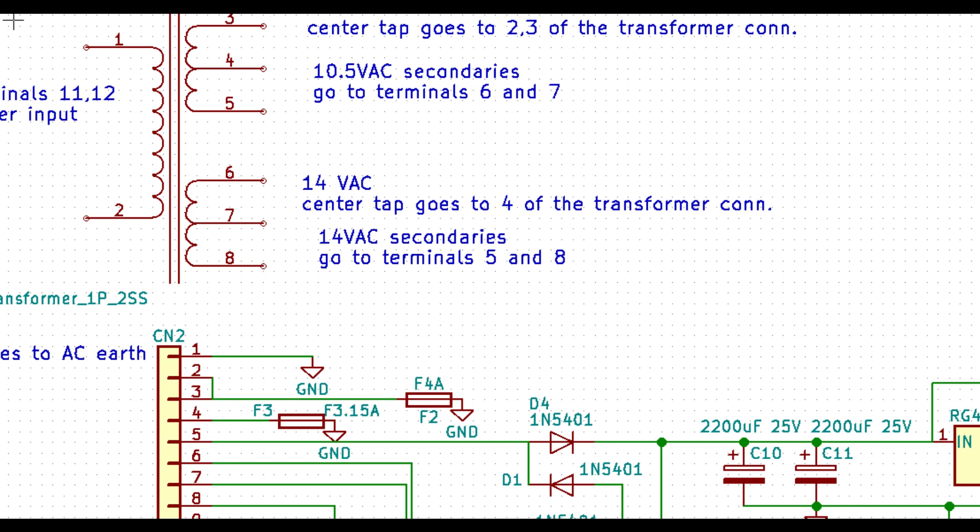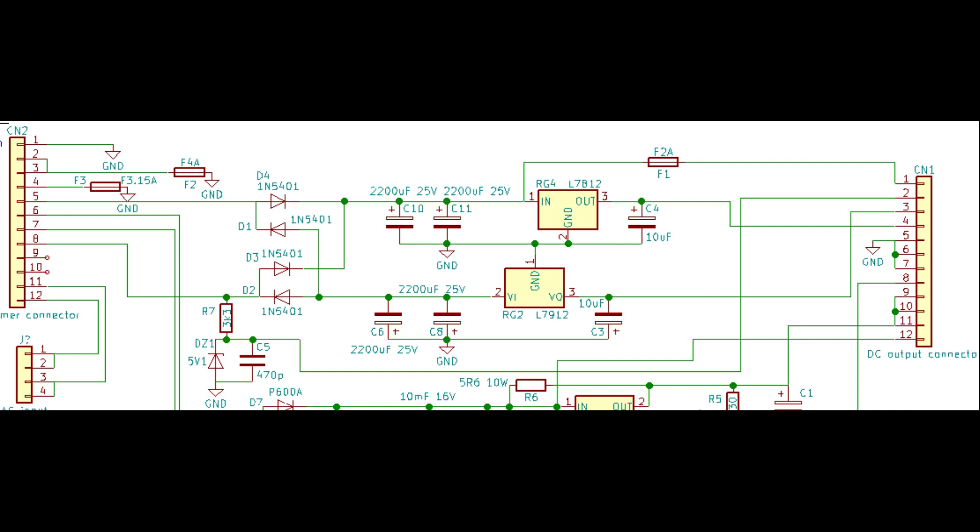The 14V secondary is rectified and smoothed to obtain two opposite polarity unregulated DC rails. The positive rail is then regulated to 12V and the negative to minus 12V by a 7812 and a 7912 1A regulators.